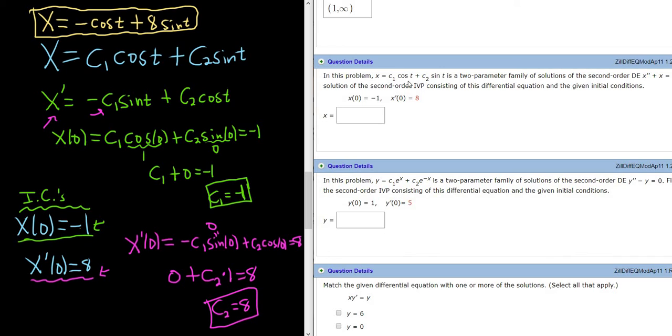So there's infinitely many solutions here because c1 and c2 can vary, right? They're arbitrary constants. So what we're doing is we're picking a particular one, we're picking the one that satisfies these two conditions.